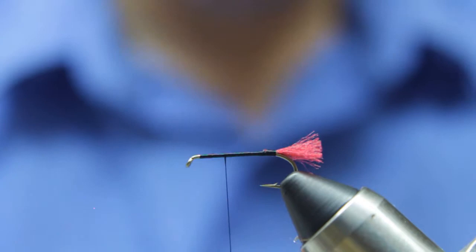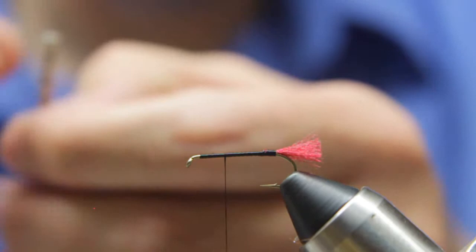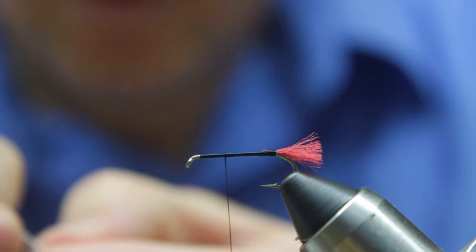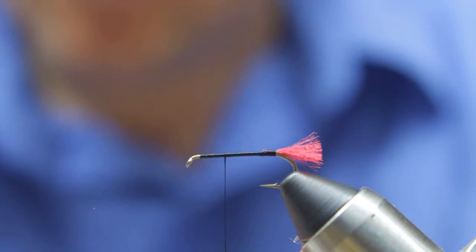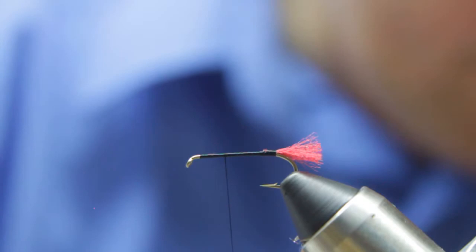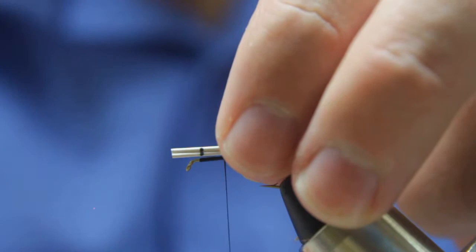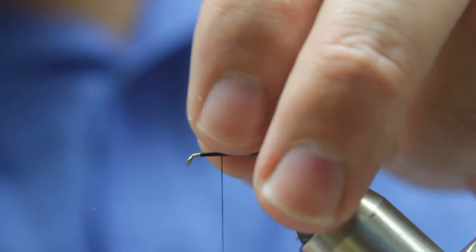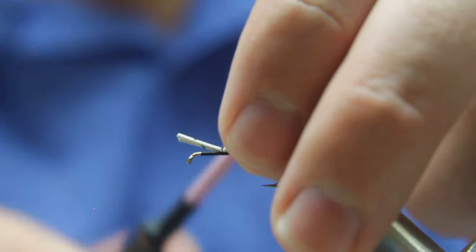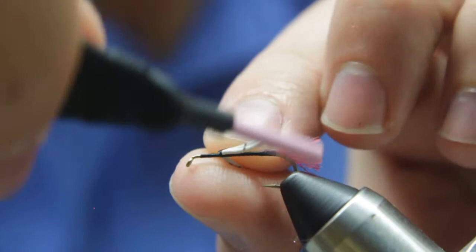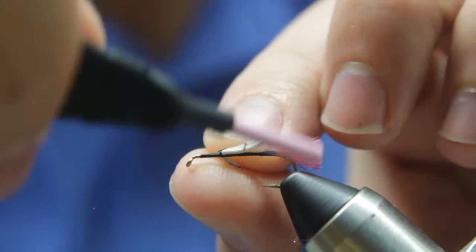Now we'll grab our rubber legs. We want to trim these rubber legs. We want them to be about the length of the shank. So we'll take these two and we'll trim off a couple legs. All right, looks good. And we're going to just kind of wrap it on there and make sure we're about halfway. And looks like we are. So we're going to put a couple wraps here and then we're going to kind of figure eight it.